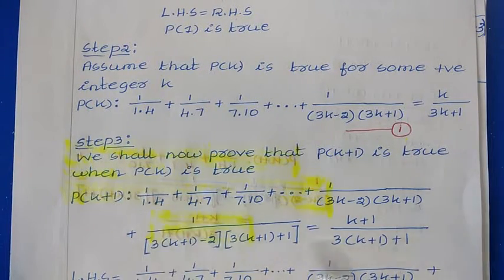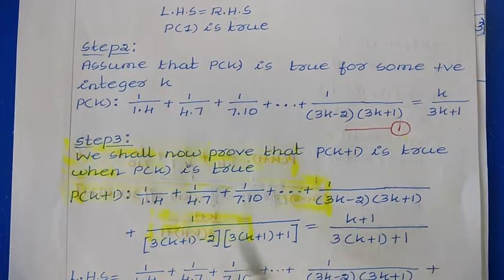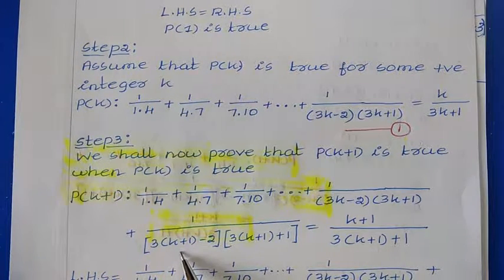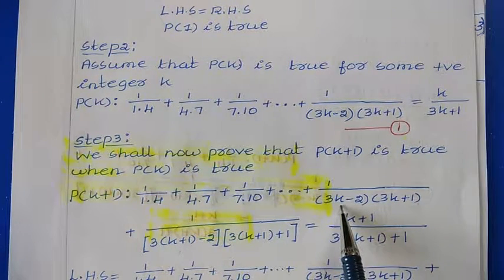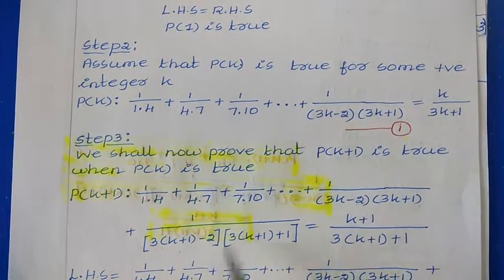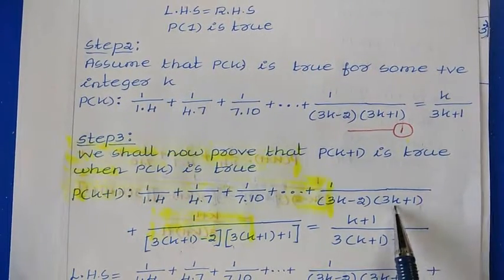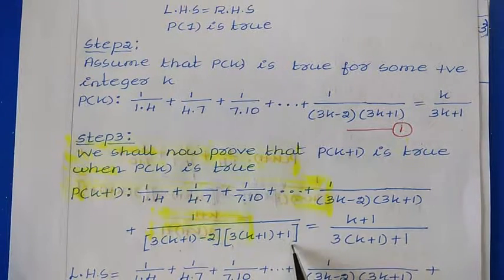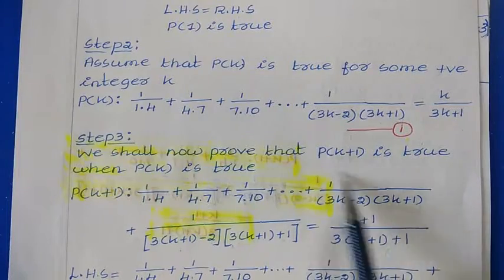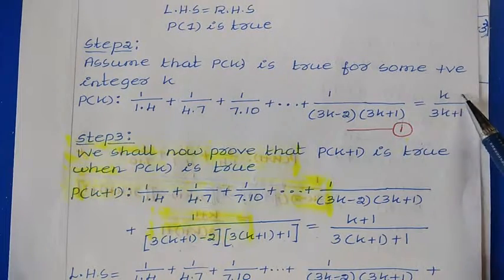Now we are writing P(k+1), so we add one more term — the (k+1)th term. To write that, wherever you have k in the kth term, make it k+1. So the (k+1)th term is 1/(3(k+1)−2 × 3(k+1)+1). The right hand side for P(k) is k/(3k+1), and for P(k+1) we replace k with k+1, giving (k+1)/(3(k+1)+1).